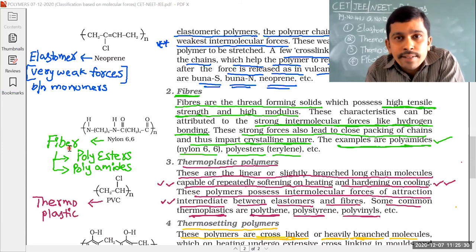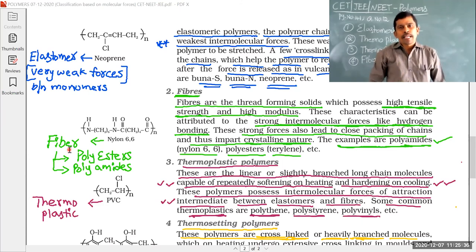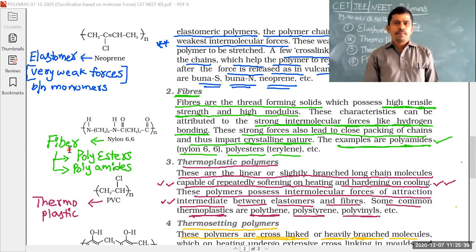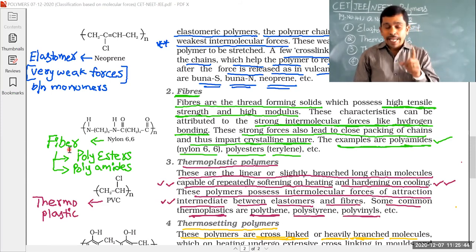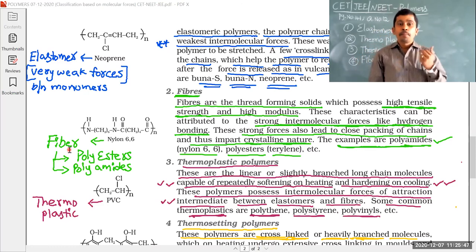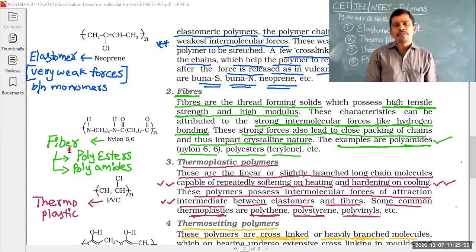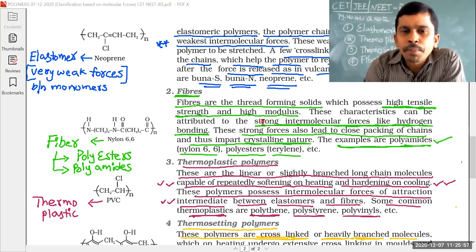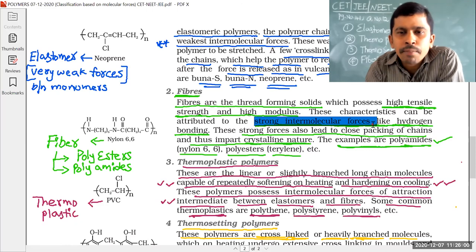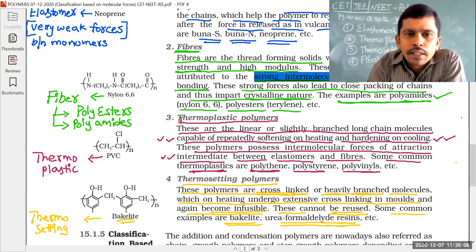Polyesters and polyamides are also examples of condensation polymers. Condensation polymers have very strong intermolecular forces like hydrogen bonding.